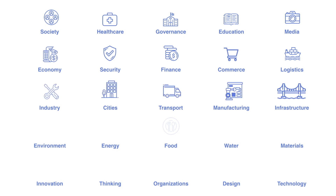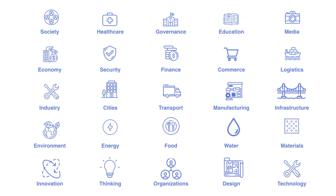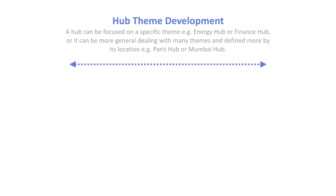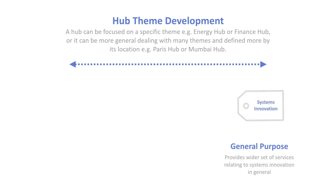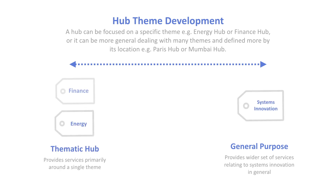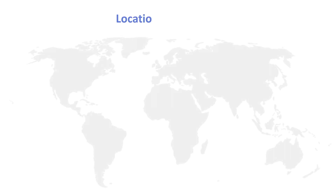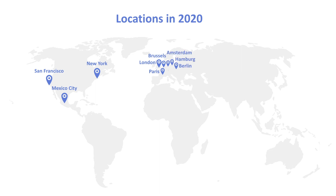There are about 25 themes in all, exploring what it means to do systems innovation in different domains. A hub can be a general-purpose hub providing many different services across domains, or it can be more specific — focusing on just one area, like an energy hub, a finance hub, or a food hub. Looking at the locations for 2020 to give an idea of what the overall network looks like: we have three in North America, Europe is getting quite crowded with three in Germany and a few others, and we have five across Asia and Australia.